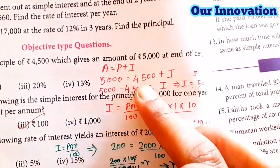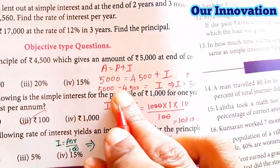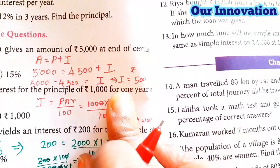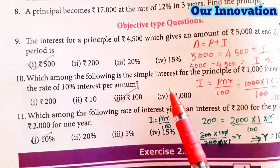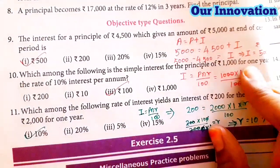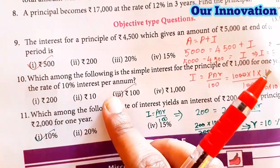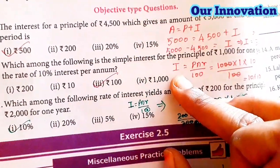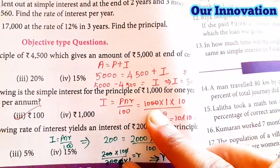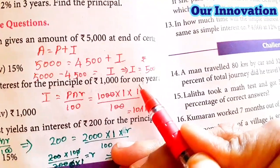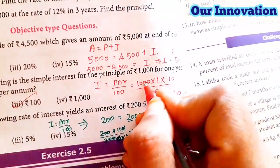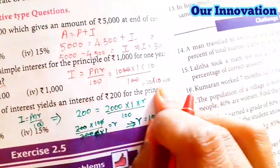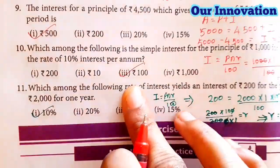MCQ Problem 10: Which among the following is the simple interest for a principal of ₹1,000 for one year at the rate of 10% per annum? Using I = PNR/100: I = 1000 × 1 × 10 / 100 = ₹100. So the answer is option three, ₹100.